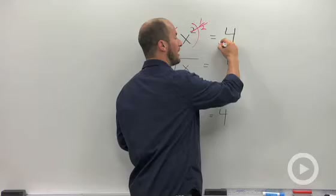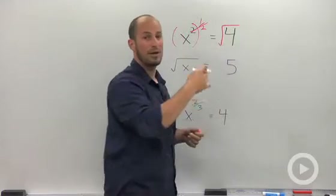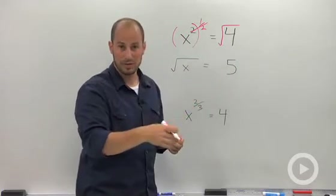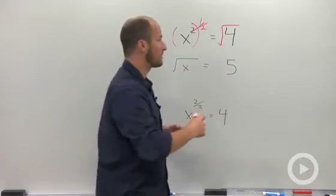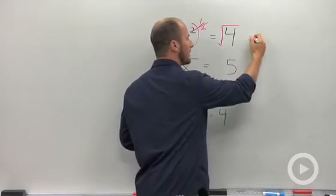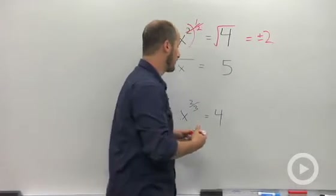The square root is the same as the 1 half power. Whenever we use the square root as a tool, we have to include plus or minus. So we end up with plus or minus 2.